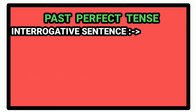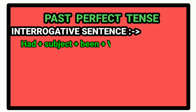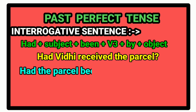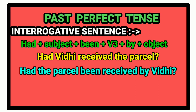For interrogative sentence in past perfect tense, the rule is: first of all, write had, and then the subject. After that, been, past participle form of the verb, followed by preposition by, and then the object, and in the last, write the question mark. For example, had Vidhi received the parcel? Now the passive voice is: had the parcel been received by Vidhi?